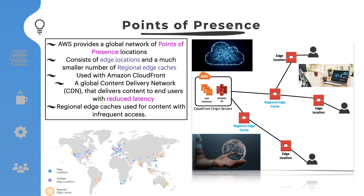The AWS points of presence are located in most major cities around the world. By continuously measuring internet connectivity, performance, and computing to find the best way to route requests, the points of presence deliver a better near real-time user experience. They are used by many AWS services including Amazon CloudFront, Route 53, AWS Shield, and AWS Web Application Firewall.